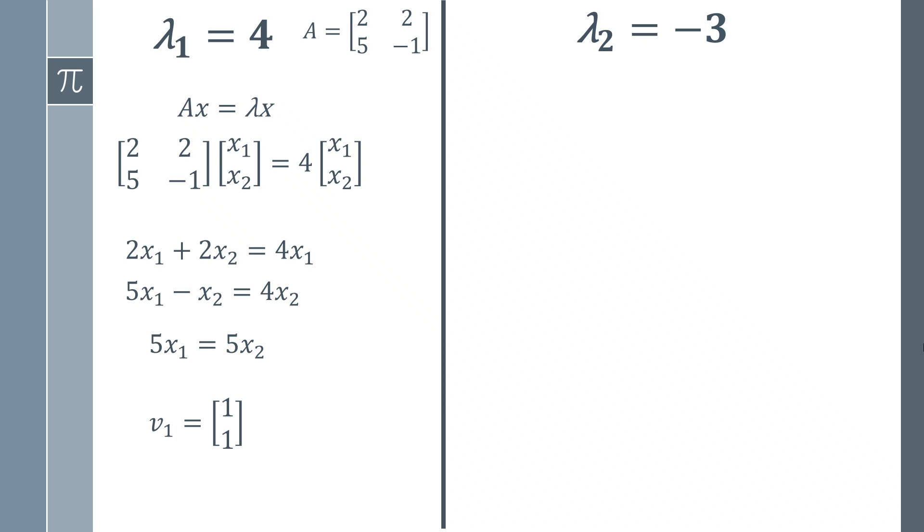We've then got λ₂ = -3 and we just repeat the same process. There is our eigenvalue problem and we've just replaced the eigenvalue with -3 because we're looking at the second eigenvalue. We multiply it out in exactly the same way and we get these two expressions. We can do various things but probably the simplest thing to do is look at the second equation and add x₂ to both sides.